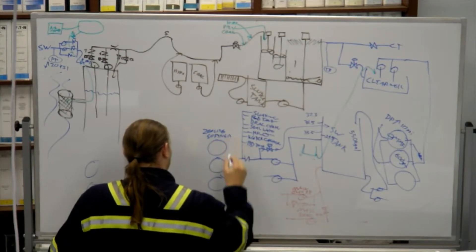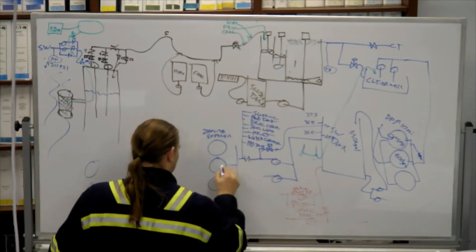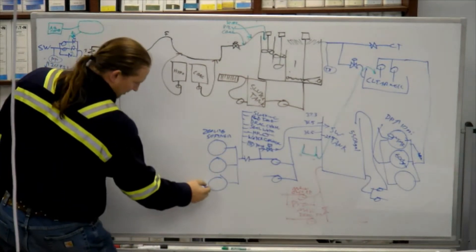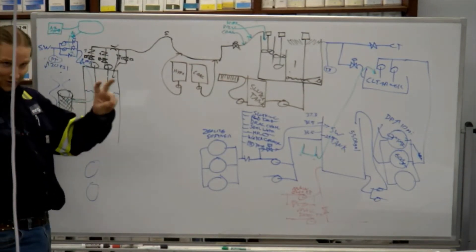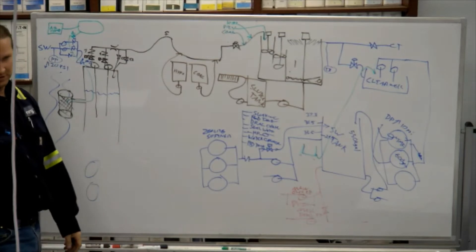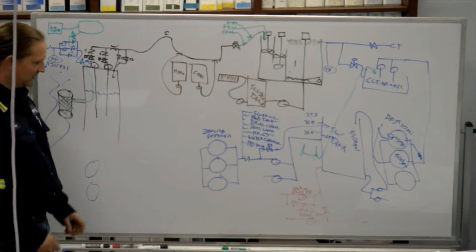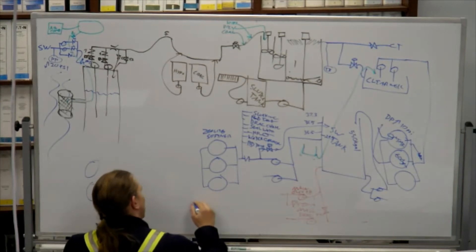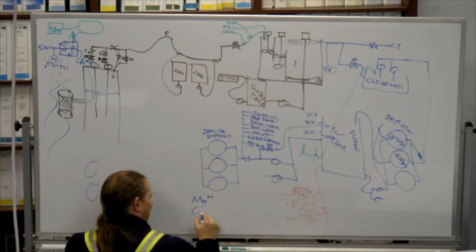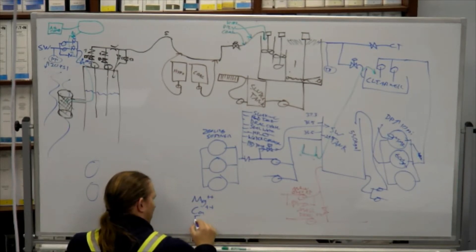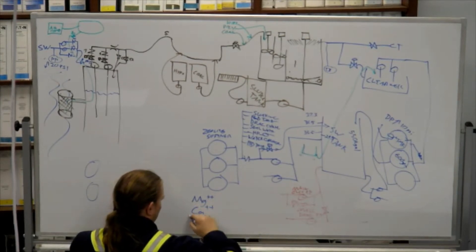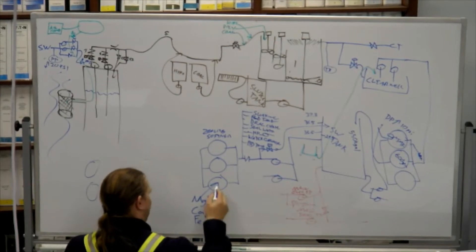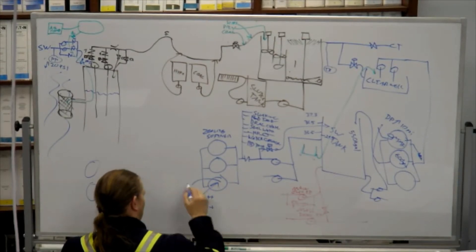What does a softener do? Takes the metals out of the water? Yes. So it removes the hardness, and the hardness is dissolved metals. So we've got things like magnesium, and calcium, and iron ions. And we're taking those out. And we are replacing them with sodium.